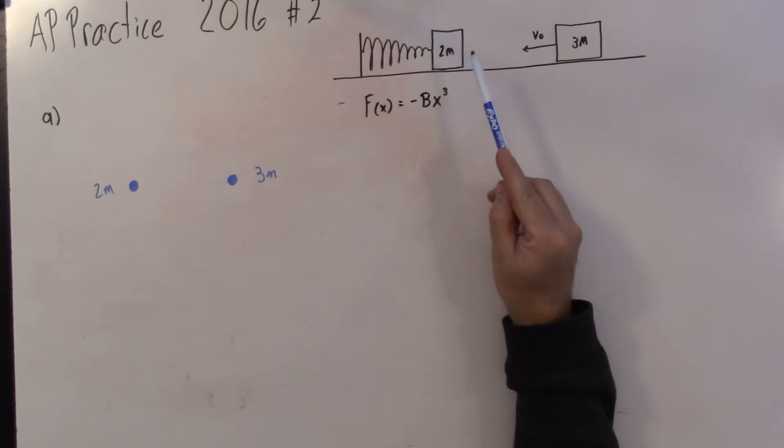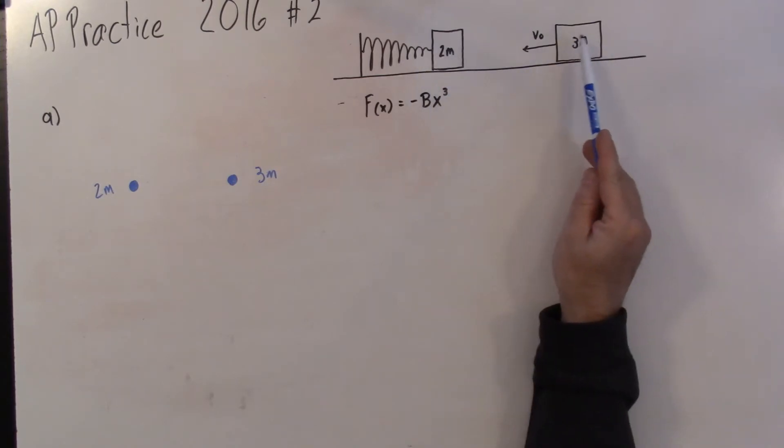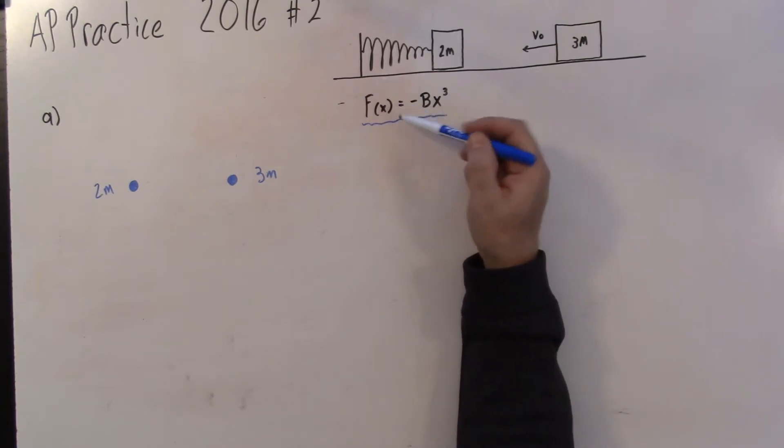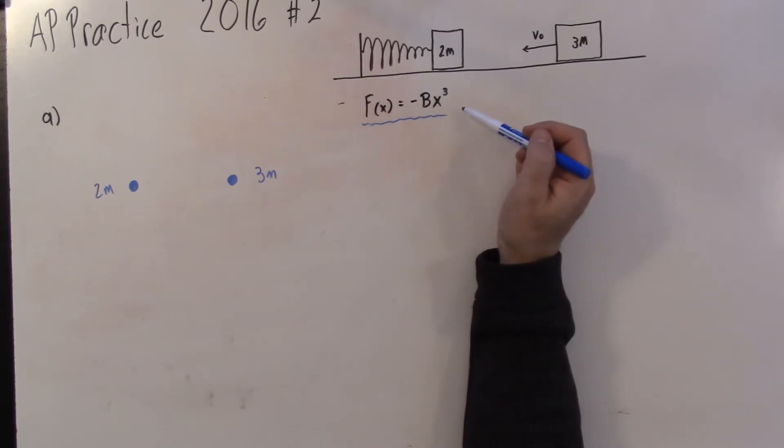We have this picture here where we have a block of mass 2m connected to a spring. We have a block of mass 3m out here at the left moving to the left at a speed of v0. One of the things that's important is that this spring has the spring equation negative bx cubed. That's a far cry from f equals negative kx, which would be Hooke's Law. So we see this is a non-ideal spring. That's going to be important for us later.